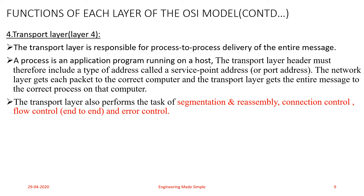Flow control at the Transport layer is performed end-to-end, process to process, rather than across a single link. Error control at the Transport layer is also performed process to process rather than across a single link. The Transport layer makes sure that the entire message arrives at the receiving Transport layer without error — that is, without damage, loss, or duplication of streams. Error correction is usually achieved through retransmission.